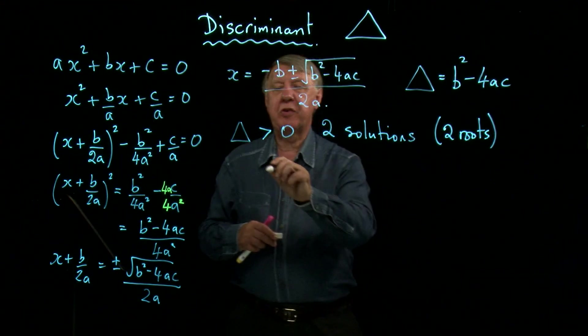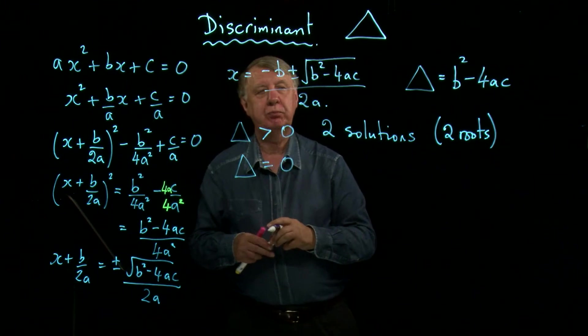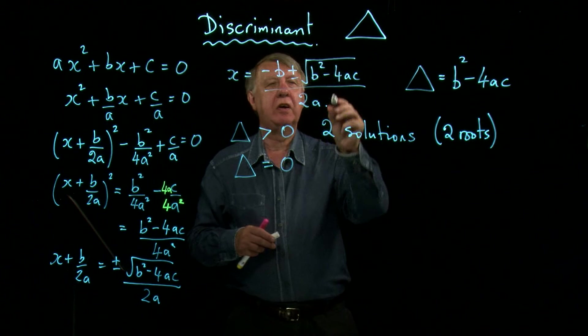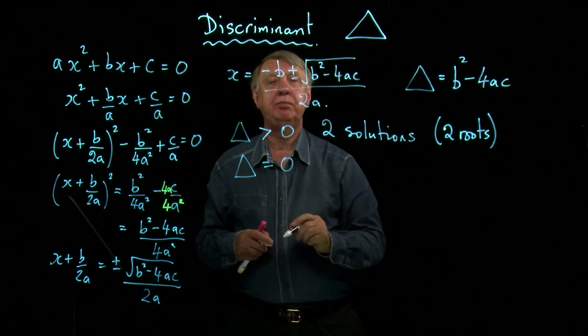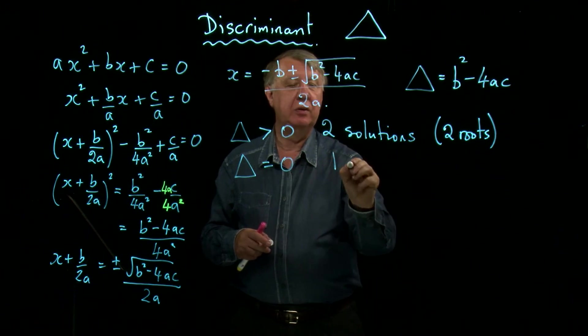What happens though, if delta is zero? Well if delta is zero, there's nothing to add or subtract. So I only get one solution. I get one root.